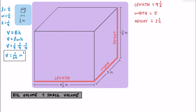Now what about the volume of this right rectangular prism? We already know the length, width, and height, and we can use the same formula: volume equals the area of the base multiplied by the height, which for a right rectangular prism means length times width times height. The length is four and a half, which as an improper fraction is nine halves. We multiply that by the width of five — written as five over one — and then three and three fourths as an improper fraction is fifteen fourths.